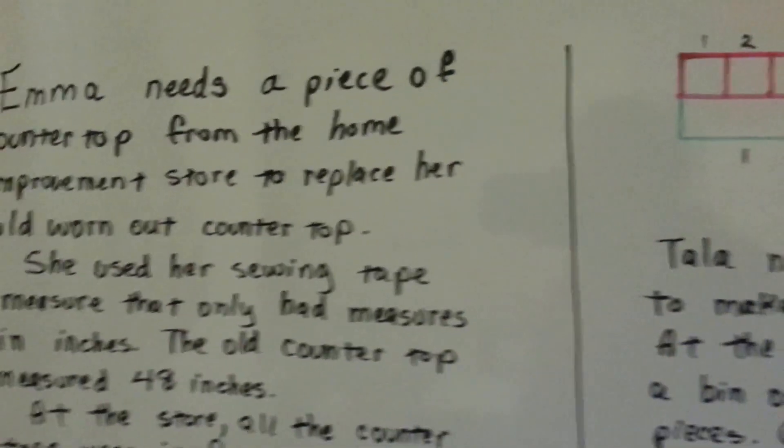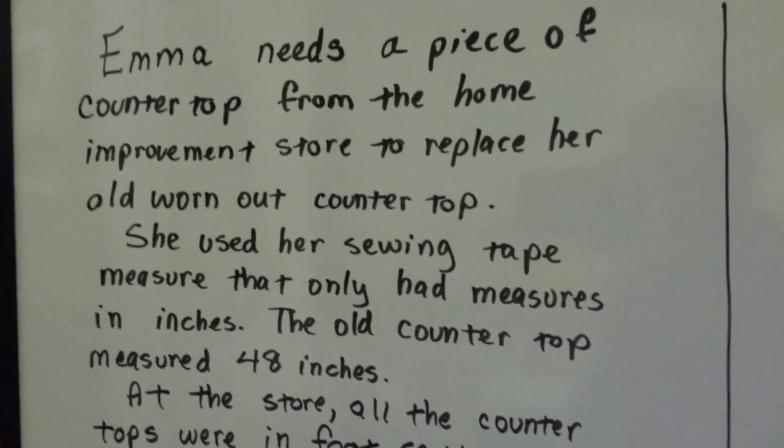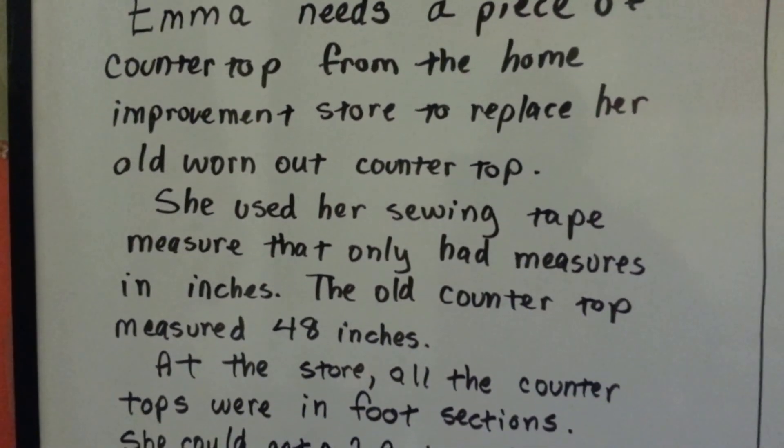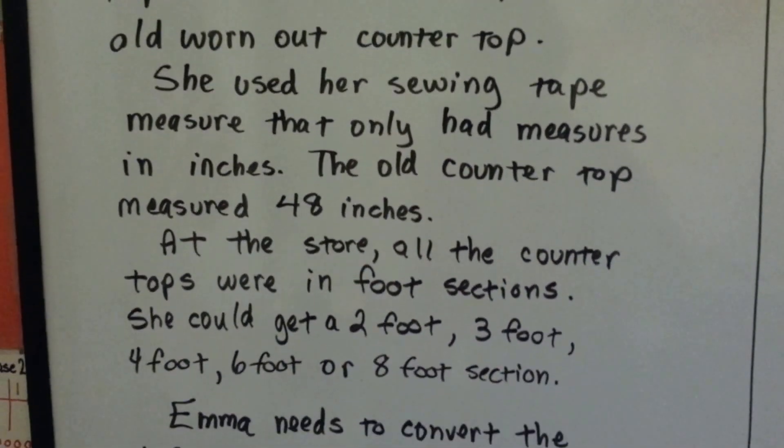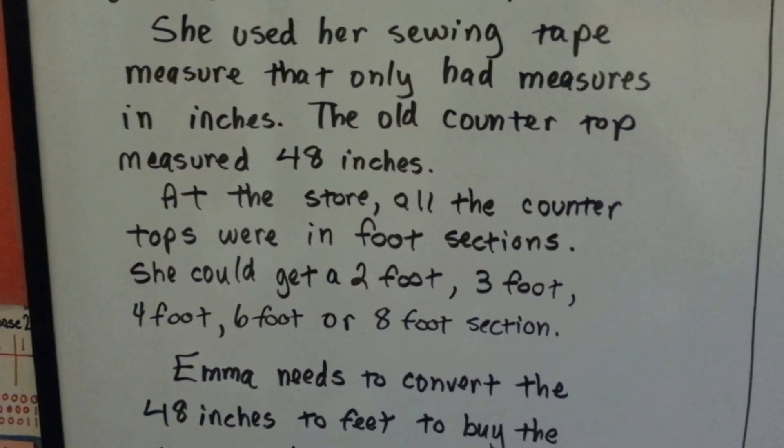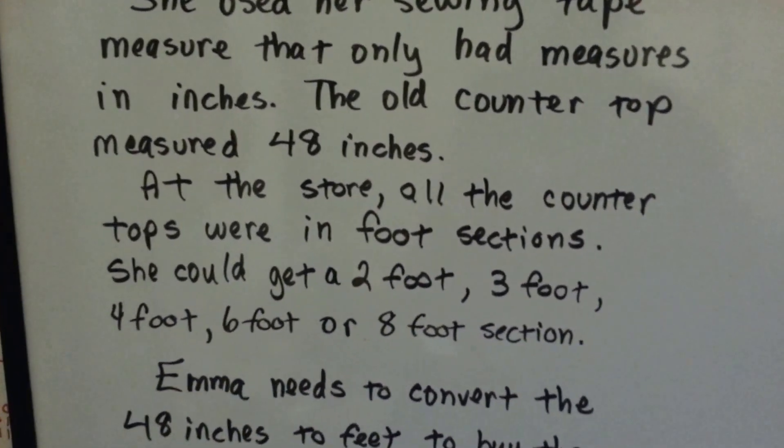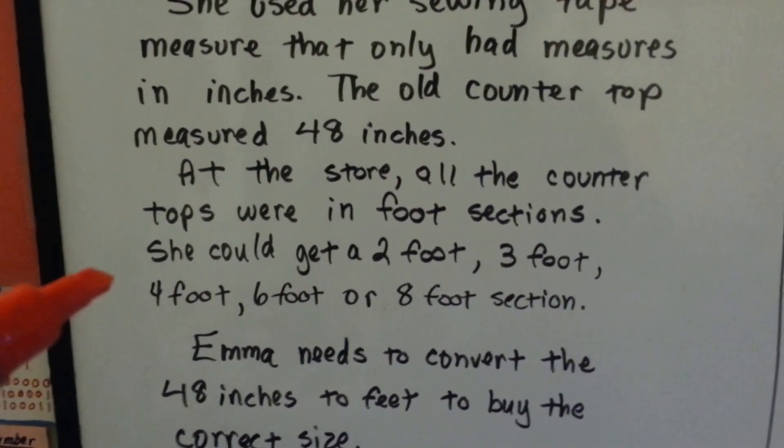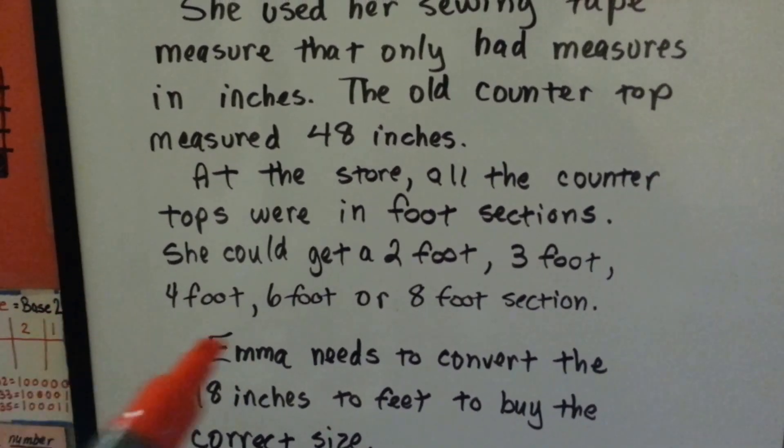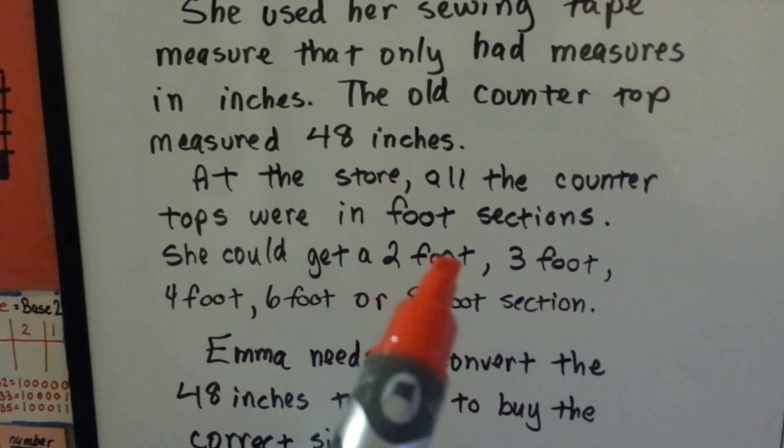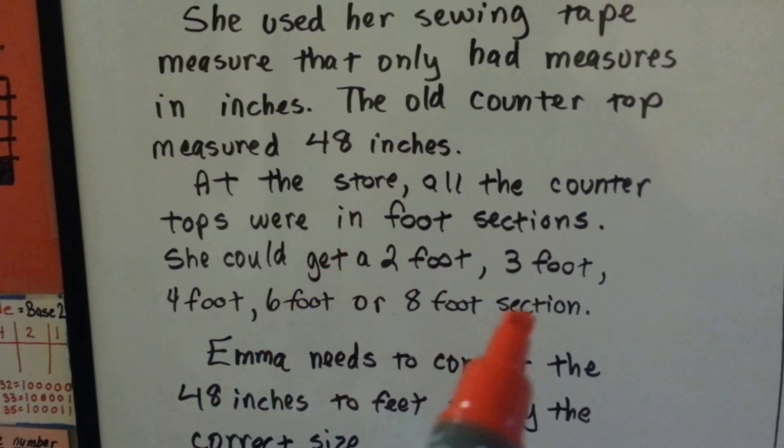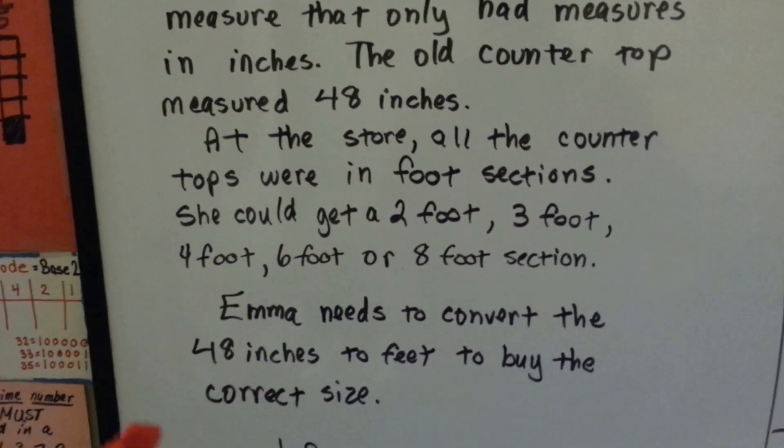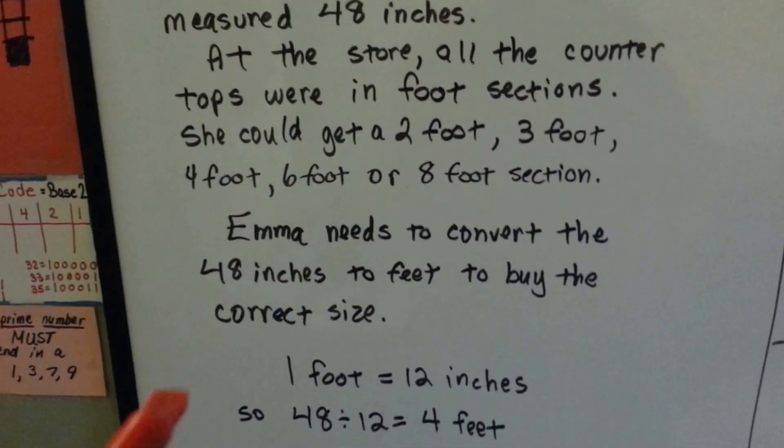Emma needs a piece of countertop from the home improvement store to replace her old worn out countertop. She used her sewing tape measure that only had measures in inches. The old countertop measured 48 inches. At the store, all the countertops were in foot sections. She could get a 2 foot length, 3 foot, 4 foot, 6 foot, or 8 foot section. Notice that this doesn't say feet because they were sections. Emma needs to convert the 48 inches to feet to buy the correct size.